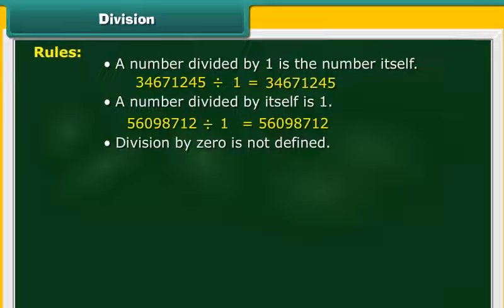Division by 0 is not defined. 56795432 divided by 0 is not defined.